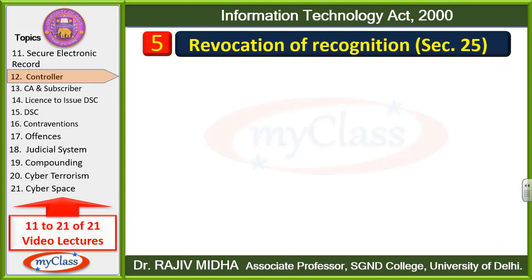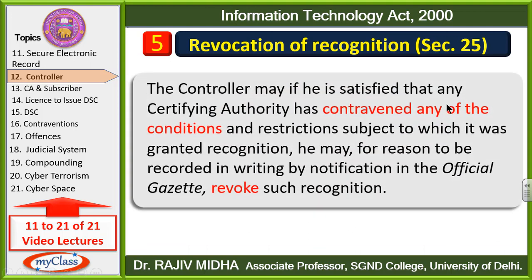5th function: revocation of recognition (revocation means cancellation). The controller may, if he is satisfied that any certifying authority has contravened — violated any of the conditions — agar controller is baat se poori tarah santusht hai ki kisi certifying authority ne kuch conditions ko violate kiya hai, and restrictions subject to which it was granted recognition — aur usne kuch restrictions ko toda hai jinke base ke upar use certifying authority banne ki permission di gayi thi — he may, for the reasons to be recorded in writing, controller woh reason writing mein record karke, official Gazette mein notify karke, us particular certifying authority ki recognition ko cancel kar sakta hai.